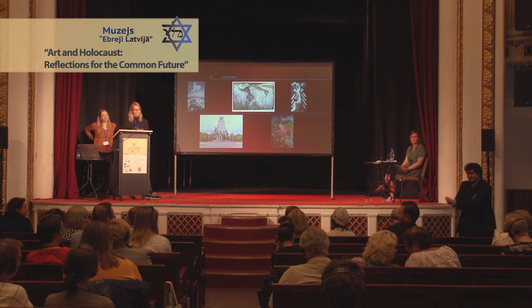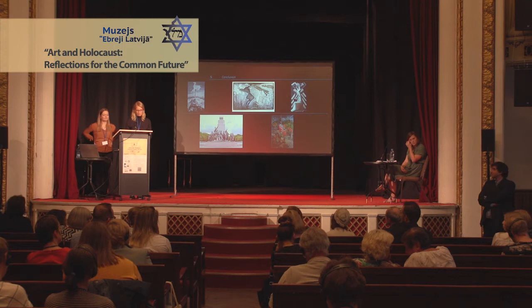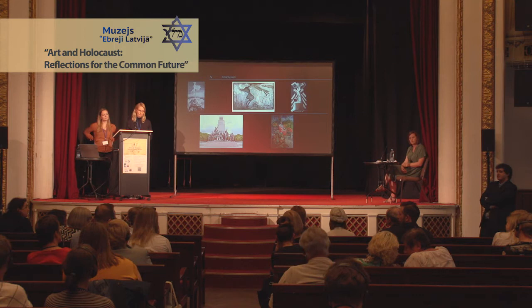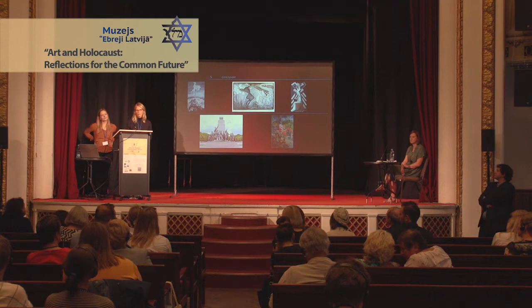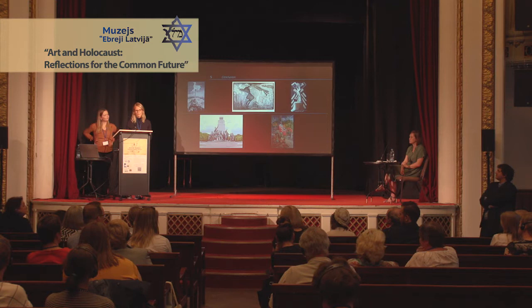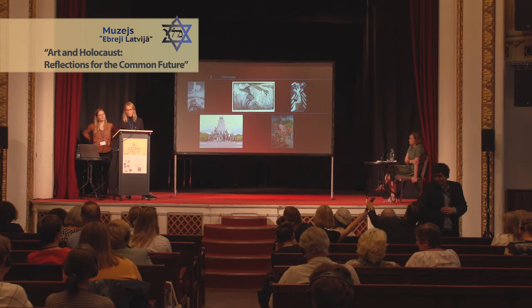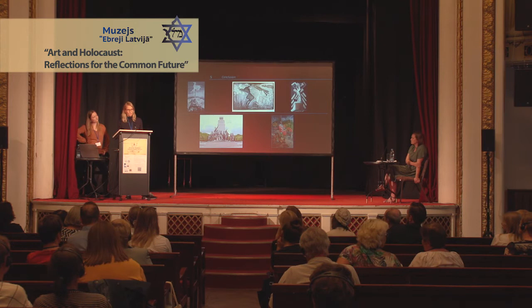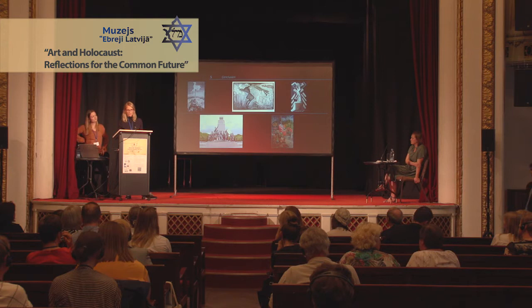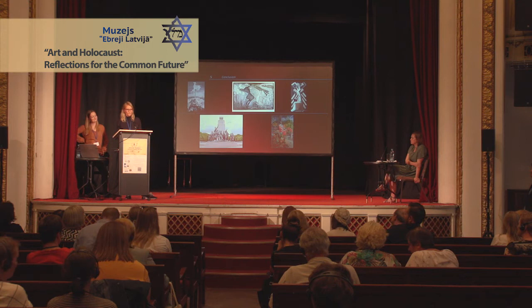An audience member thanks the presenters and asks about Lea Grundig's cycle: who decided about the iconography — was it the artist herself, or did she have advisors? Who chose the motives and what to depict? The presenter responds that the publisher simply published the whole cycle of 17 drawings, so it was not a selection but the complete cycle, implying the iconographic decisions were Grundig's own.